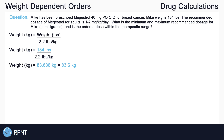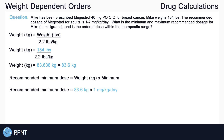Now we can find our recommended minimum and maximum dosages. We take the patient's weight in kilograms and multiply by the recommended minimum dose. The question states the recommended dosage is 1 to 2 milligrams per kilogram per day, so we use 1 mg/kg/day as our minimum: 83.6 kg × 1 mg/kg/day = 83.6 milligrams per day.